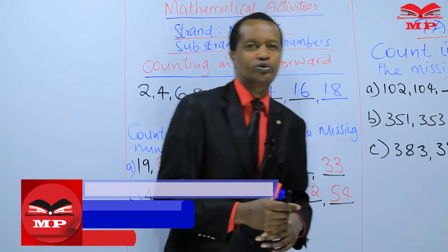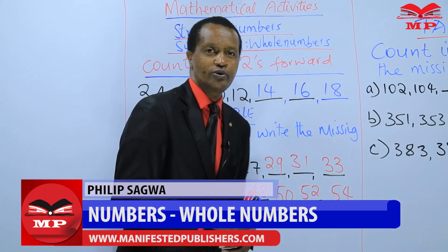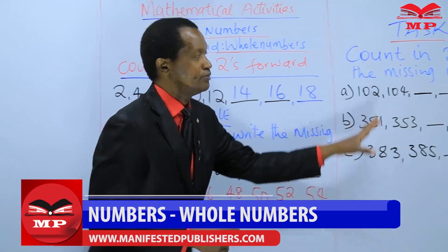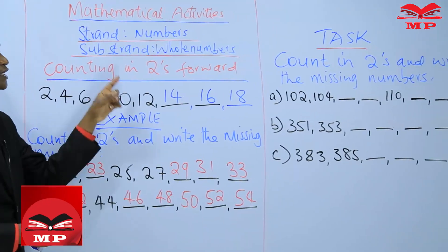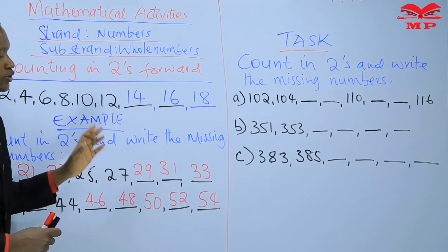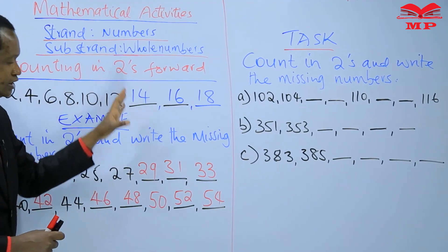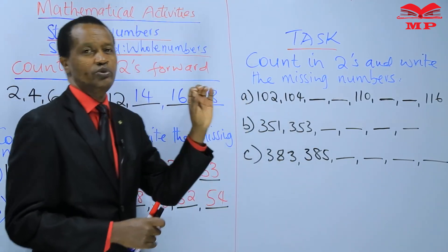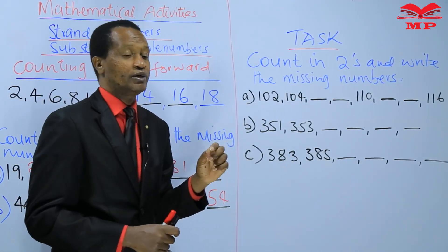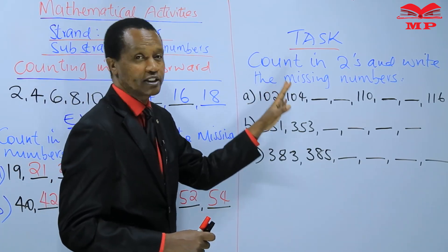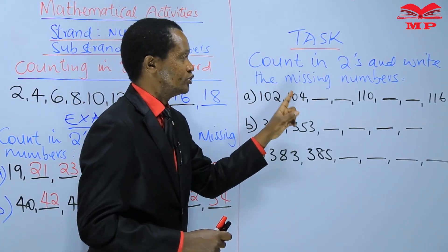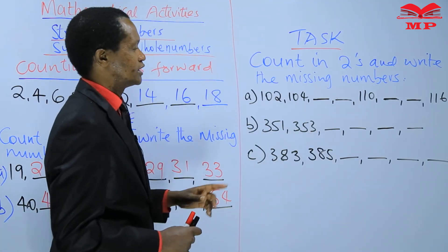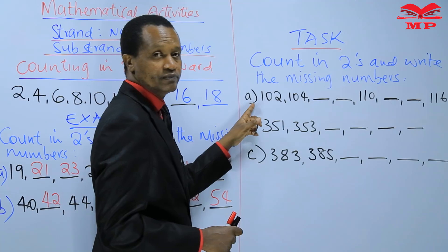Welcome back learners. We want to continue with our lesson — we took a short break so you could do the assignment on counting in twos forward. We did two questions together, then I gave you homework. If you have not done it, please go and do it, then come back. Now I want us to count in twos and write the missing numbers together here on the board.